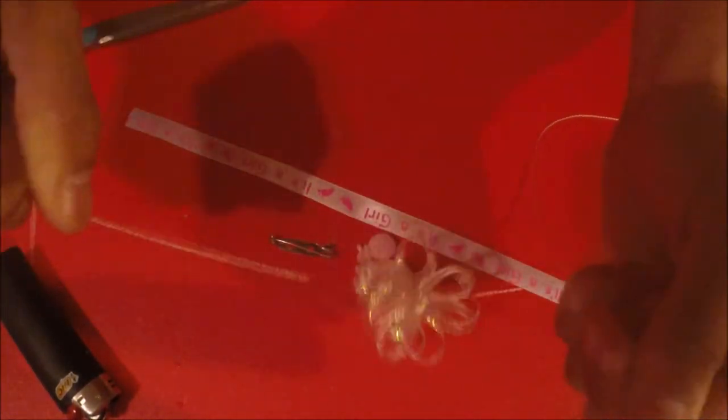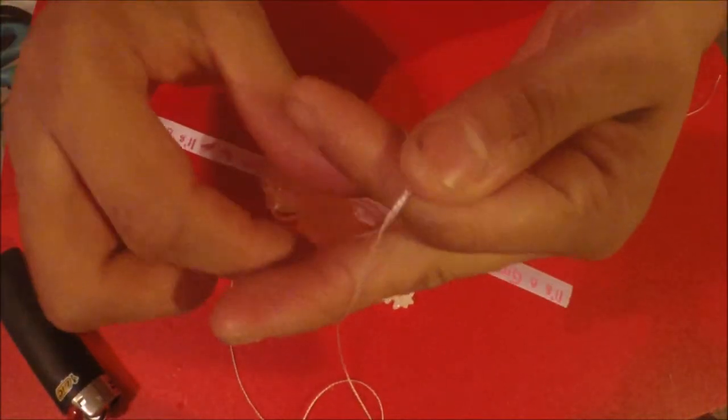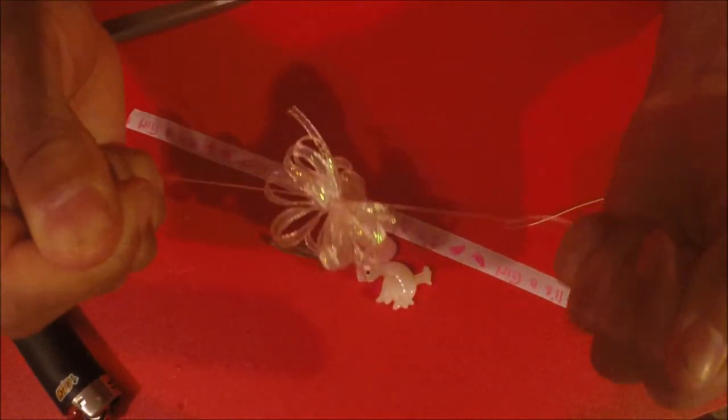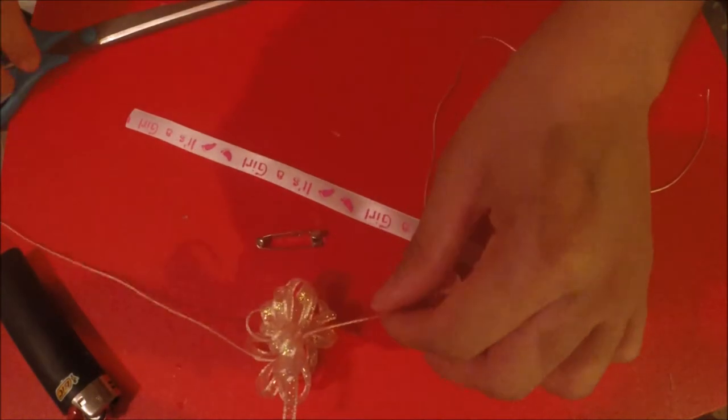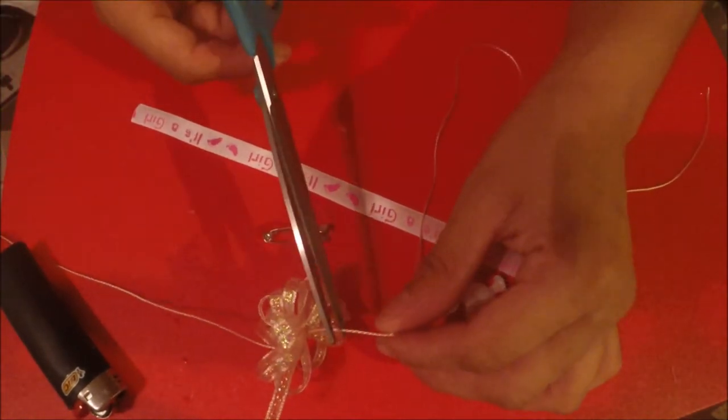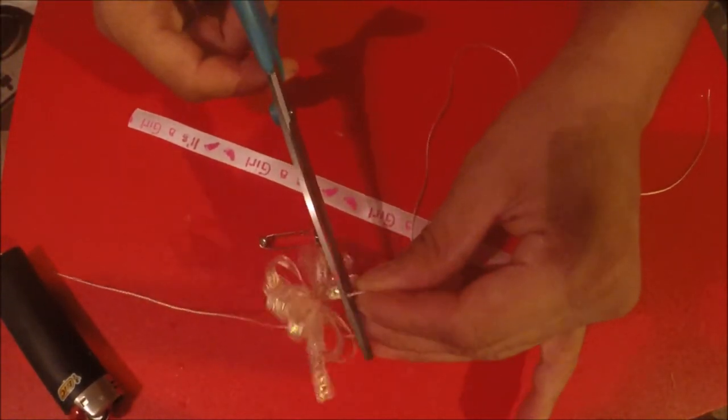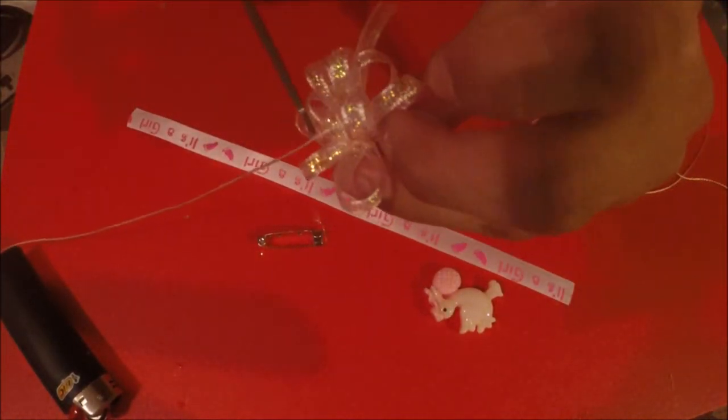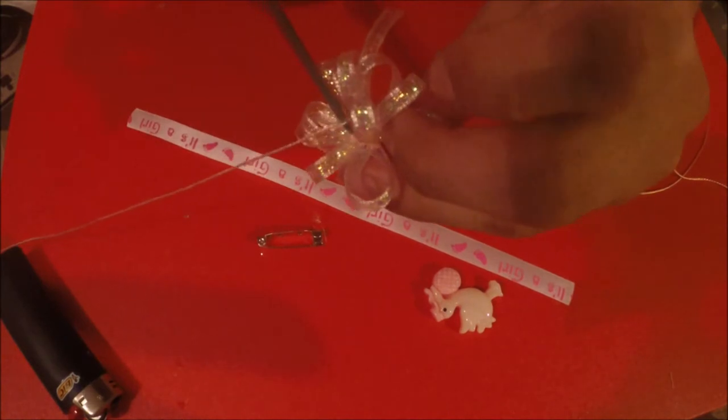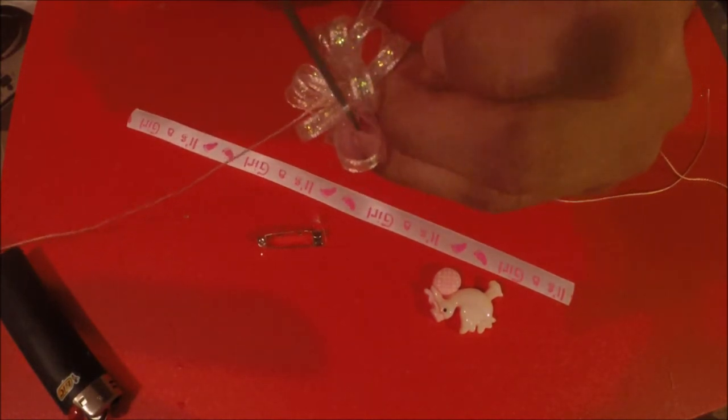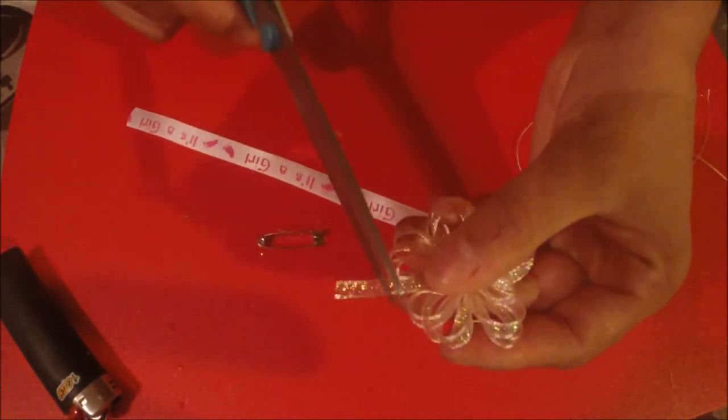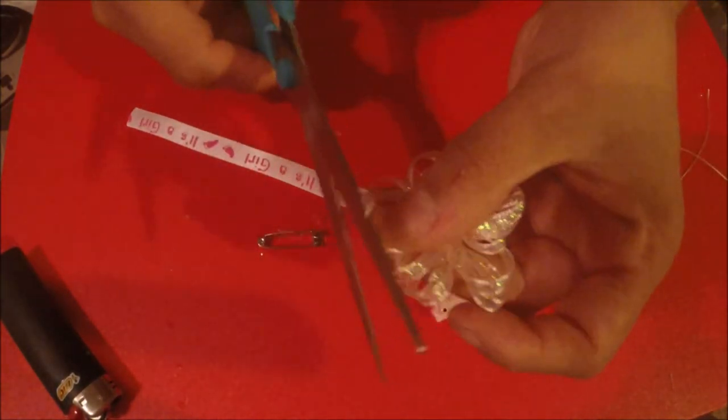So it will come up, second knot to make sure it will stay in place just like that. We cut out the extra string and we cut out the extra ribbon coming out from the bow.